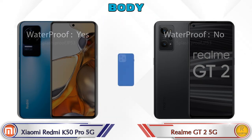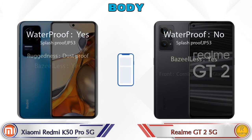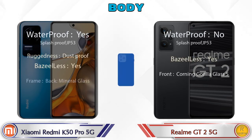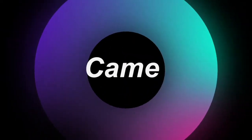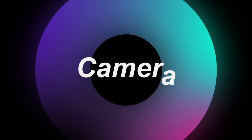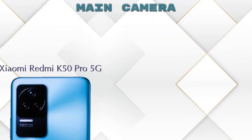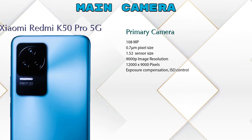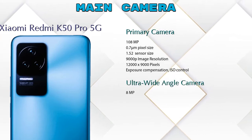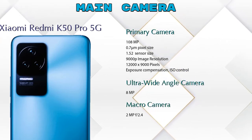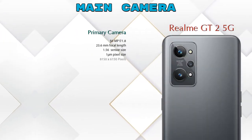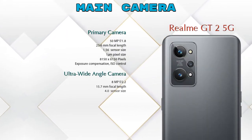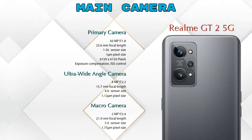Let's see the complete details about the body of both phones. Now let's look at our favorite feature — the camera. Both the K50 Pro 5G and the GT2 5G have three rear cameras each: a primary camera, an ultra-wide-angle camera, and a macro camera.